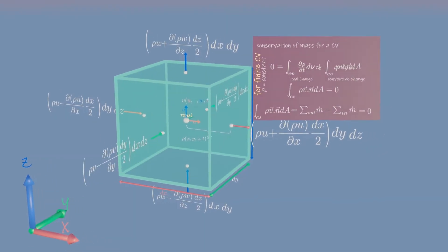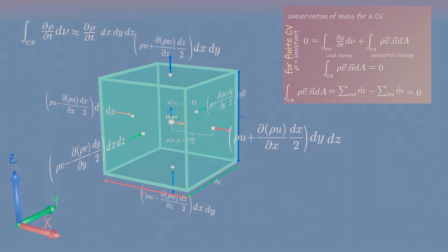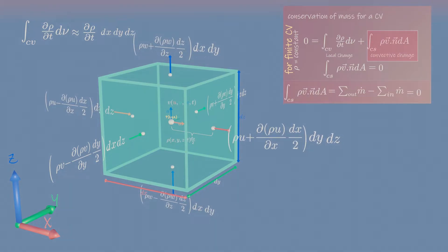As the control volume shrinks to a point, the volume integral on left-hand side of finite control volume becomes... Now apply the approximation of these mass flow rates to the right-hand side of this equation. We add all the mass flow rates into and out of the control volume through the faces.